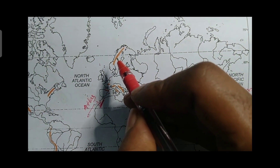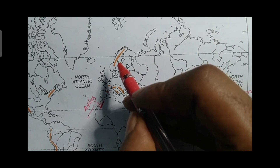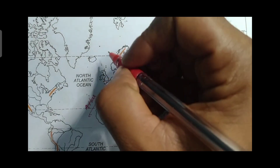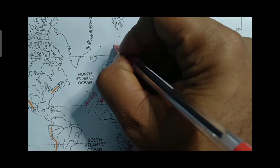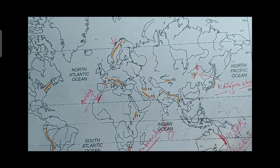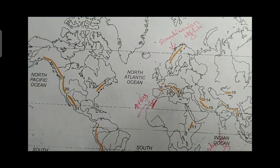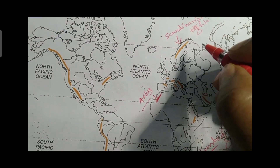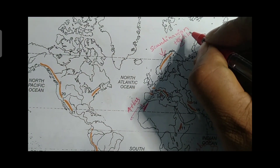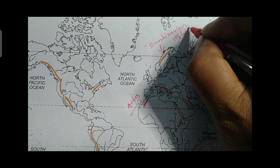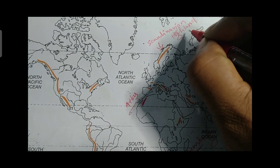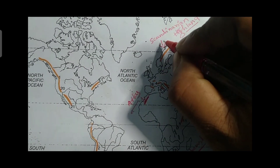And number 9 — this mountain is called the Scandinavian Highland. Draw a line in brown color and label it 'Scandinavian Highland.'